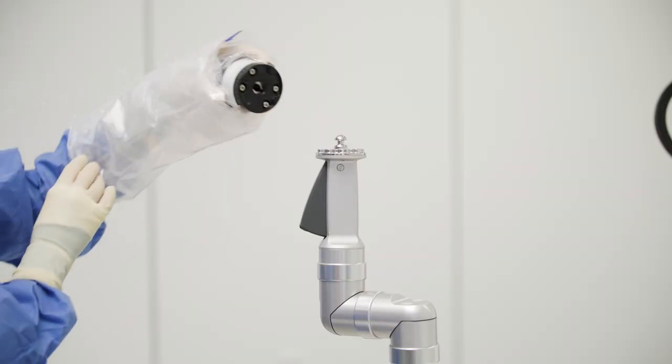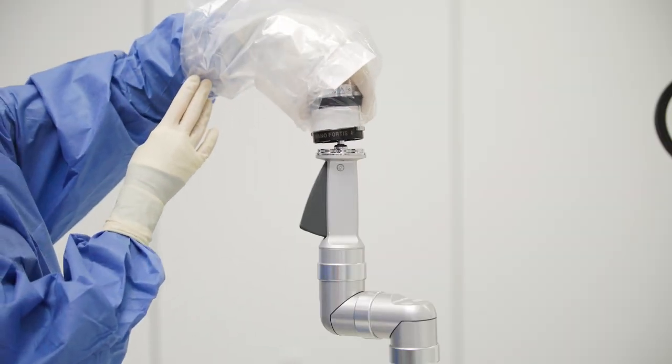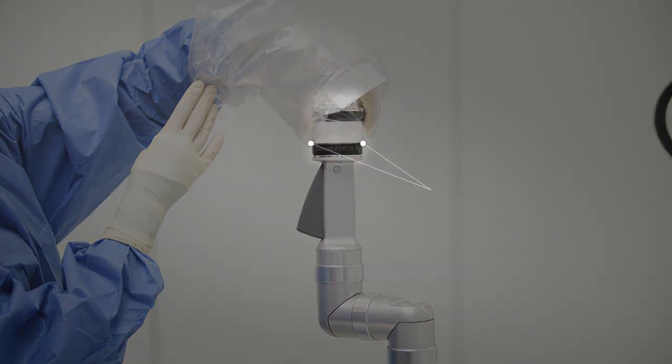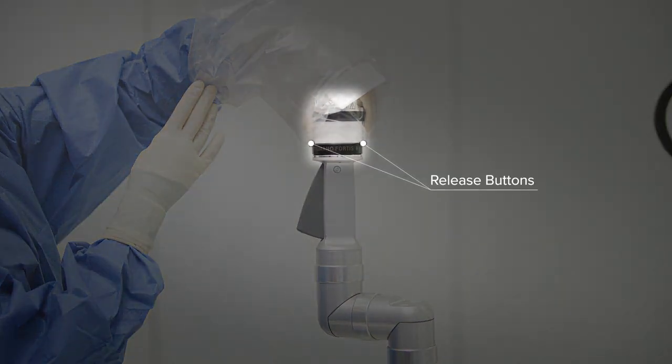Fit the adapter in the direction of the arrow to the pin of the support arm and turn. The locking device engages with an audible click. Both release buttons should protrude when the adapter is fully engaged.